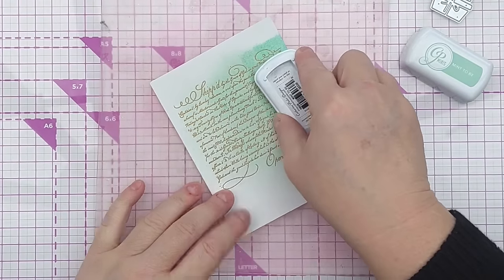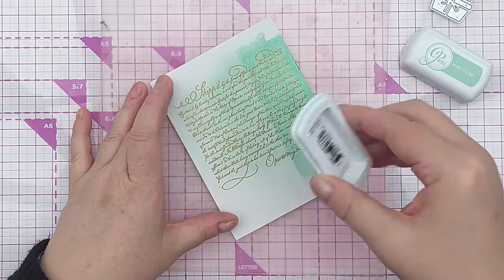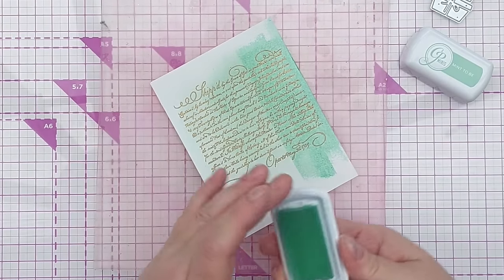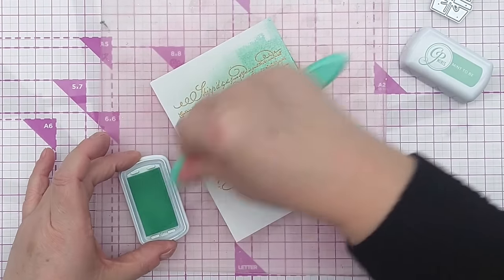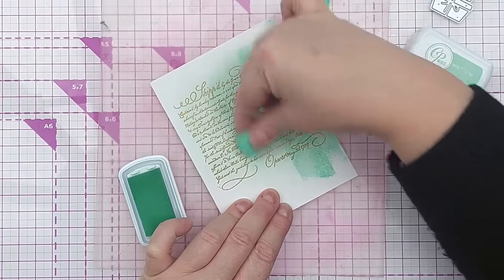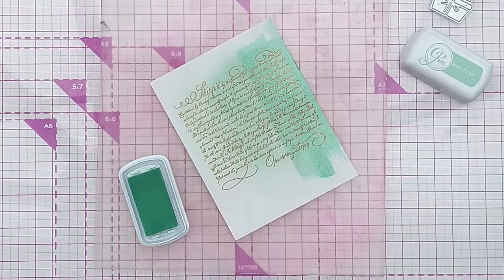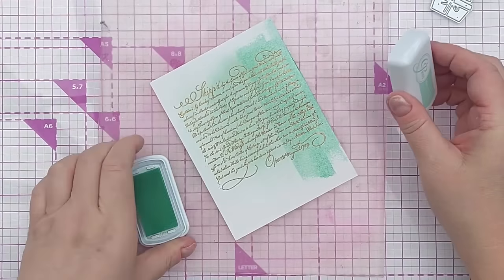Okay so I think I've got a fairly good gradation of color going over there. I'm just going to give the end one some more saturation, boost the middle one a bit and then leave the end one there really light.